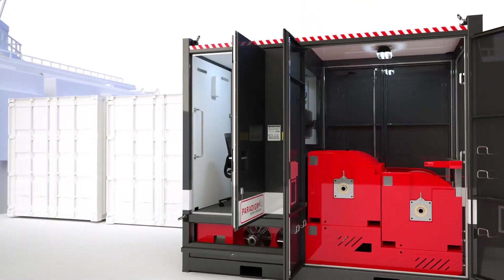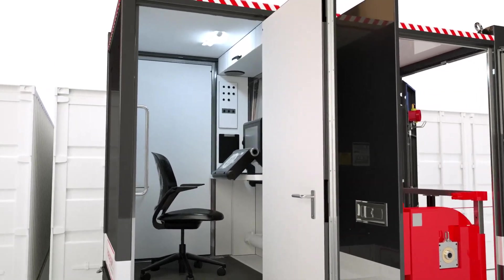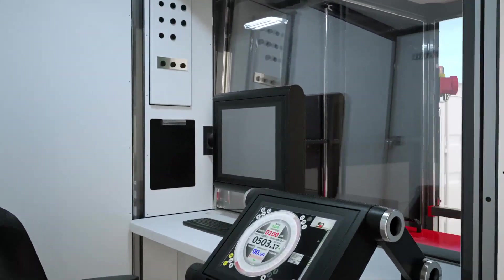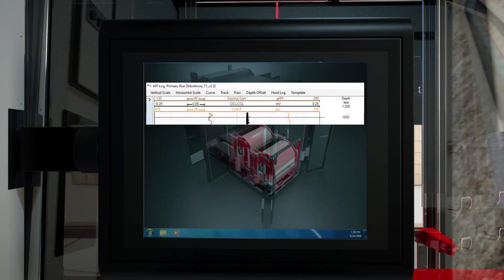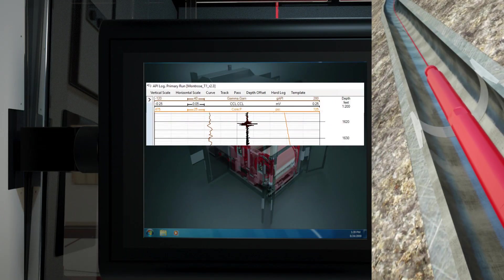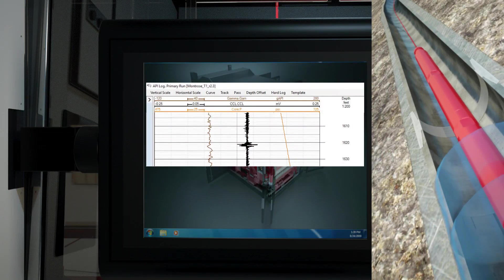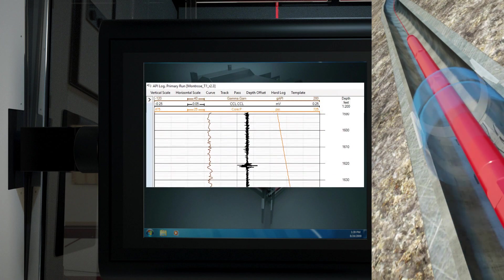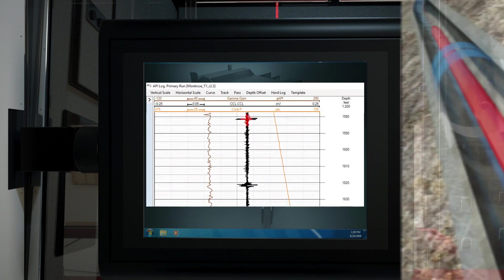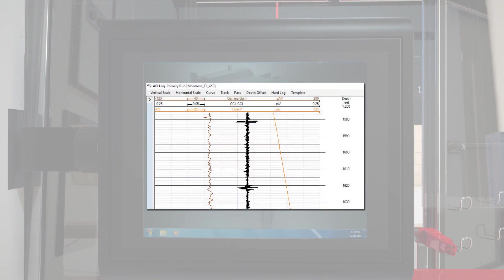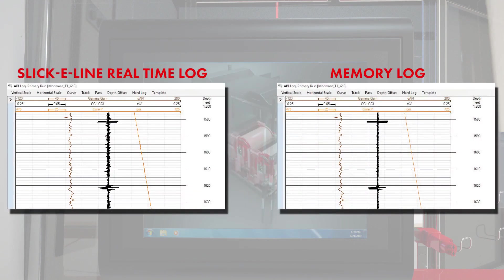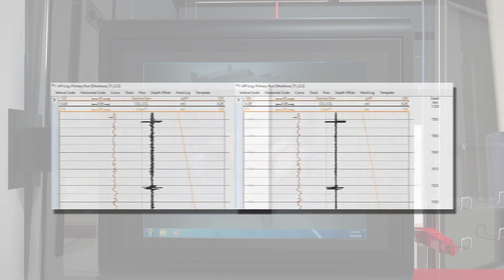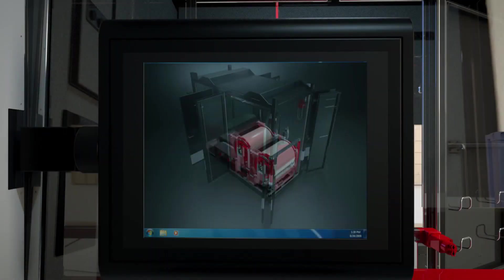The communication head provides real-time transmission of case toll and production logging data. This results in lower non-productive time, as log information is immediately available at surface. Log quality is improved as log data can be scrutinized, repeat sections can be real-time identified, and logging speeds optimized. When necessary, the full data set can then be later retrieved from memory and can be easily merged with real-time data.